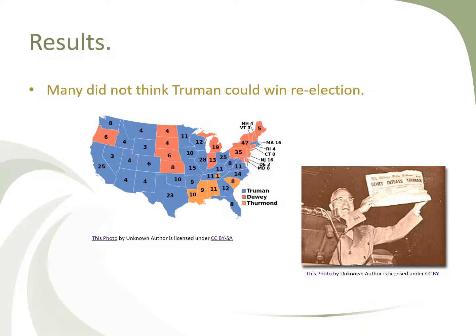Many newspapers and the press did not believe Truman could win reelection. Here he is holding up a paper from the Chicago Daily Tribune which states that Thomas Dewey had defeated Truman. They printed this paper ahead of time before the election results came out. This is Truman laughing and smiling because many people didn't think he was going to win, and the paper had publicly declared 'Dewey Defeats Truman' — a mistake on their part. This is one of the most historic pictures in American history.